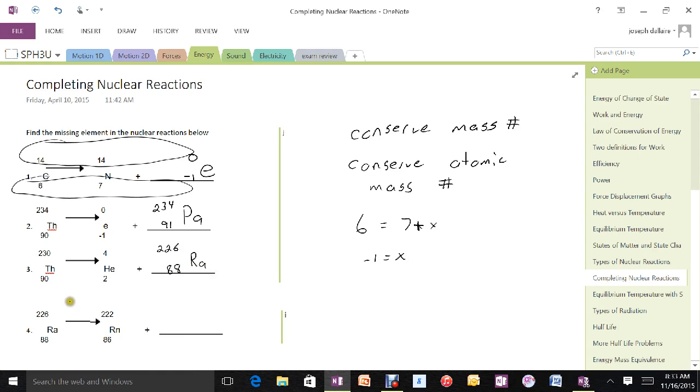And finally here, radium going down to radon, 88 to 86. So I'm missing 2 on the bottom. 226 going to 222, missing 4 on the top. And that's producing then an alpha particle, or if you want, you can call that helium. Either acceptable.